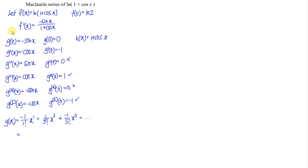Let's simplify: negative 1 over 1 is negative 1, so we have negative x. Then 1 over 3 factorial — 3 factorial equals 6. And 1 over 5 factorial — 5 factorial equals 120. So g(x) equals negative x plus x cubed over 6 minus x to the power of 5 over 120, and so on.